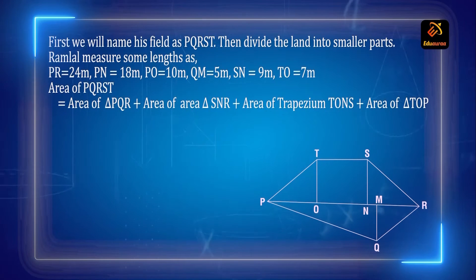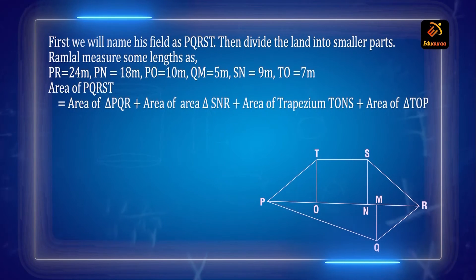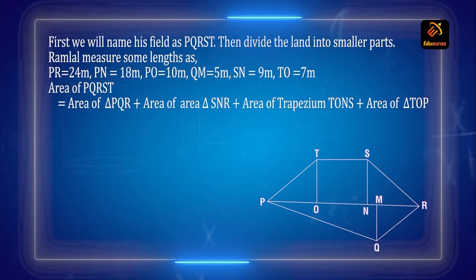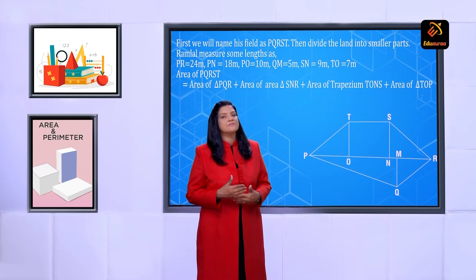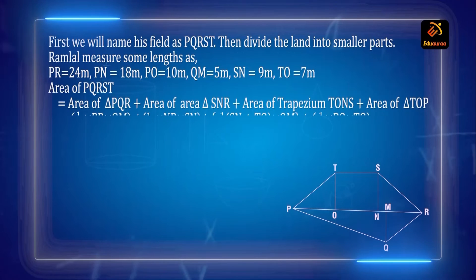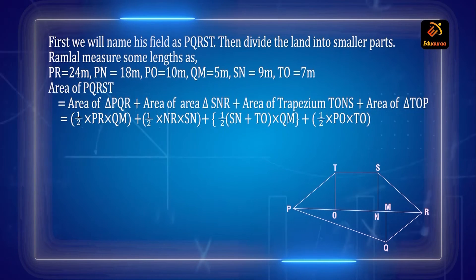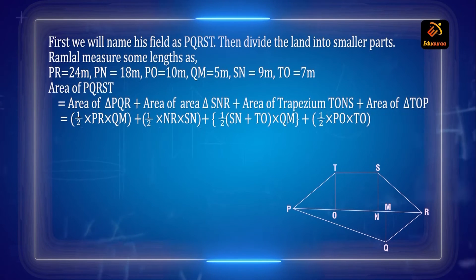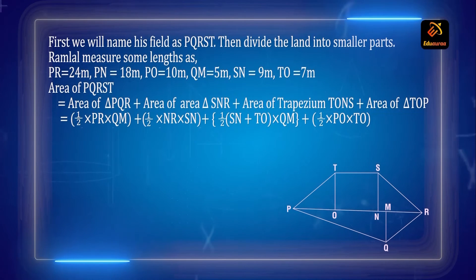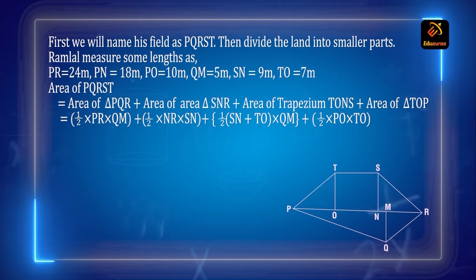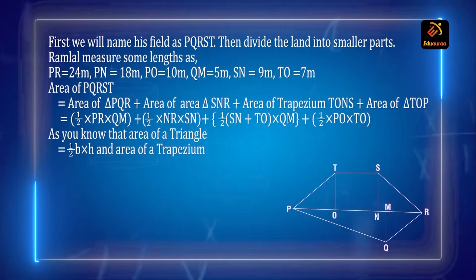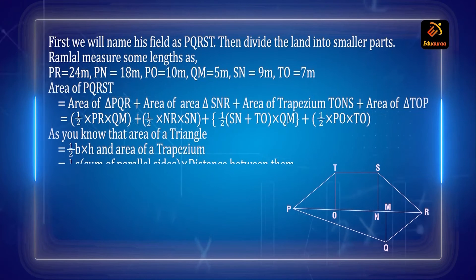So area of PQRST = area of triangle PQR + area of triangle SNR + area of trapezium TONS + area of triangle TOP. We know all these formulae — area of a triangle is half into base into height, and area of a trapezium is half into sum of the parallel sides into the distance between them.